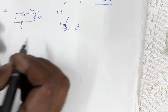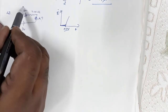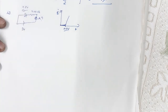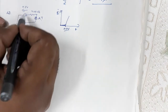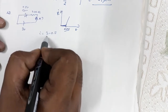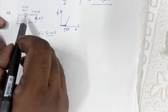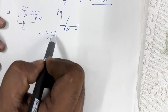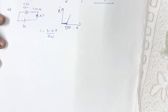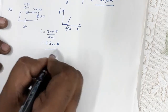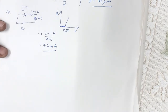This diode will exert a potential of 0.7 volts. So when 3 volts is applied, the current will be (3 − 0.7) / resistance. Since this diode is forward biased it offers no resistance, so the resistance is 200 ohms. Therefore the current is (3 − 0.7) / 200 = 11.5 milliamperes.